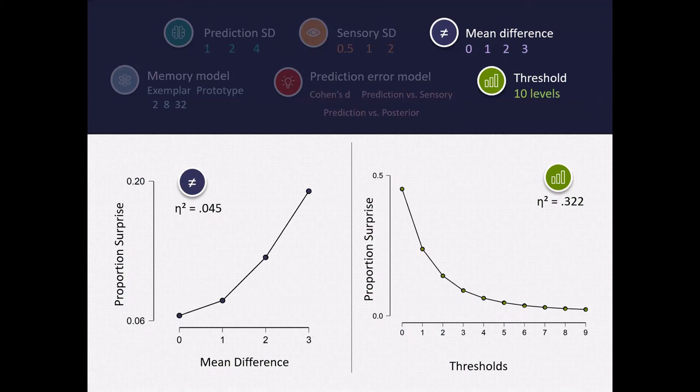So the results for 10,000 trials show that surprise threshold had the greatest effect on how often you get surprised. It is larger than mean difference. So threshold matters more than the difference between your prediction and your experience.